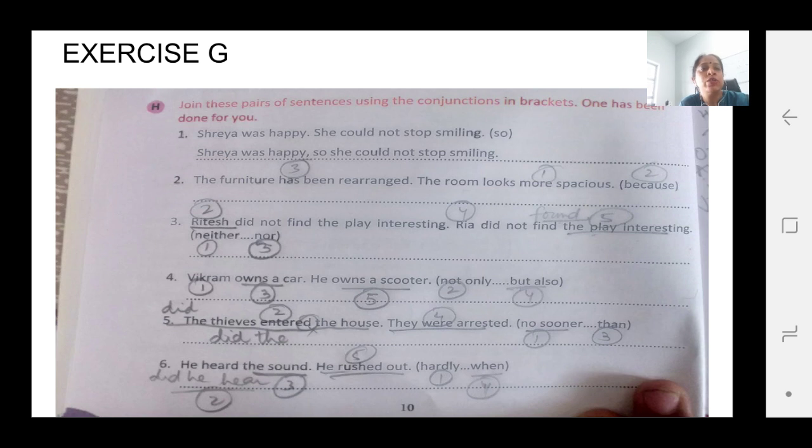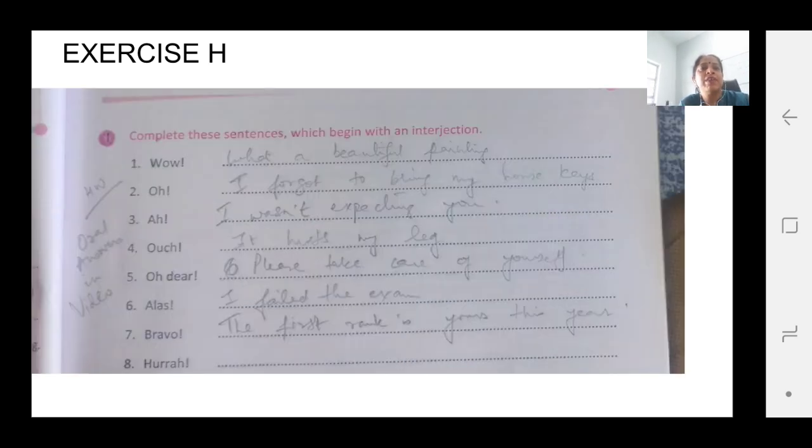Hardly. Usne sound thik se suna bhi nahi tha jab wo bahar aya. This is the meaning of the sentence. Number 7, 8 are not shown in the picture. You will have to attempt it yourself.